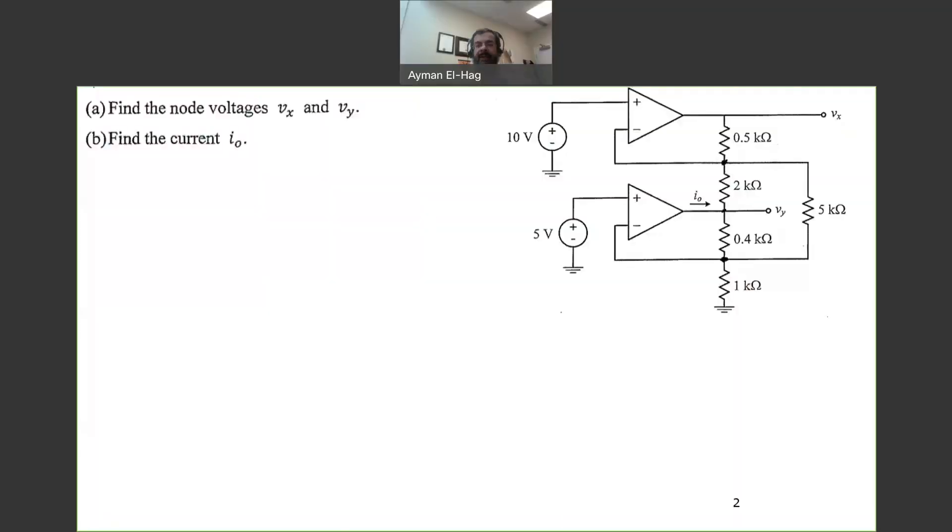Everyone, welcome back to the series of circuit practice problems. We have here another op-amp question. So here we have two op-amps. As you can see here, the upper one connected to a 10 volt to its positive terminal. The bottom one has a 5 volt connected to its positive terminal.